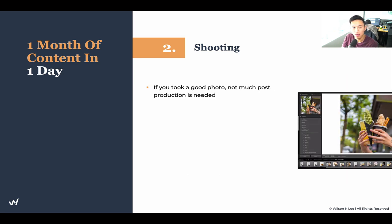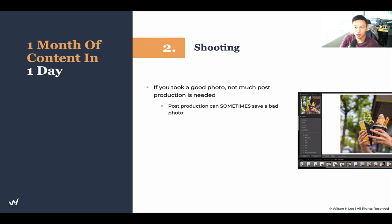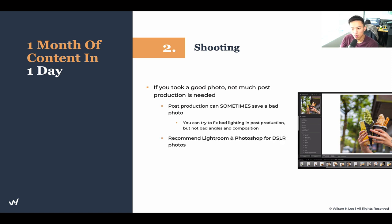Next up, if you take good photos, not much post production is needed. Post production means when you take pictures and the lighting isn't the best or it needs some photoshopping — that's when post production comes into play. Post production can sometimes save a bad photo. You can try to fix bad lighting in post production, but bad angles and composition you cannot fix. I recommend using Lightroom or Photoshop for DSLR photos, or Snapseed or VSCO for phone photos, depending on what equipment you use to shoot.